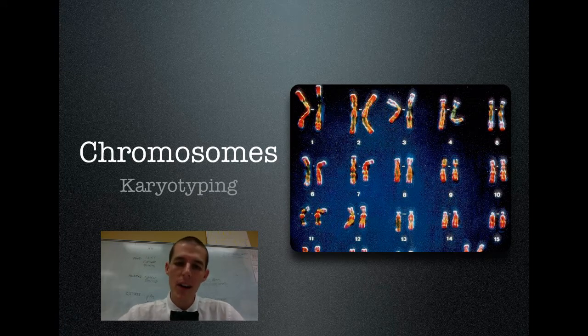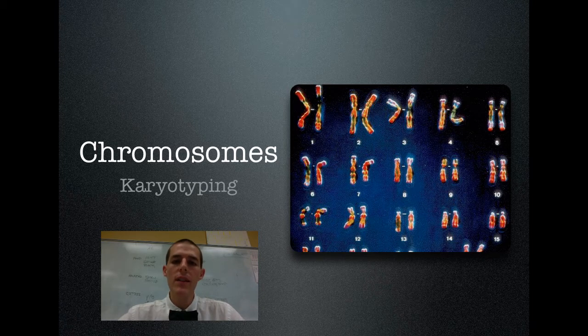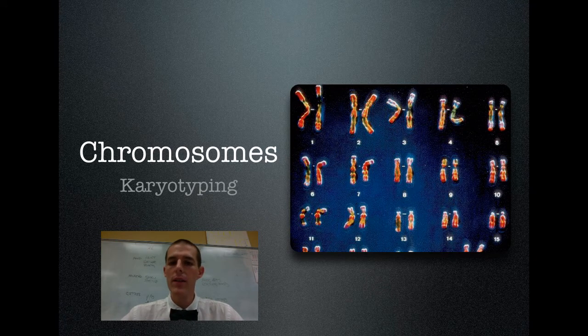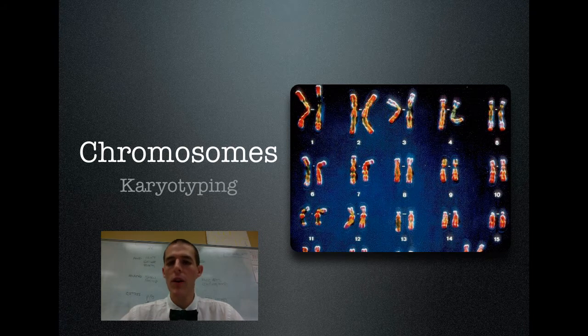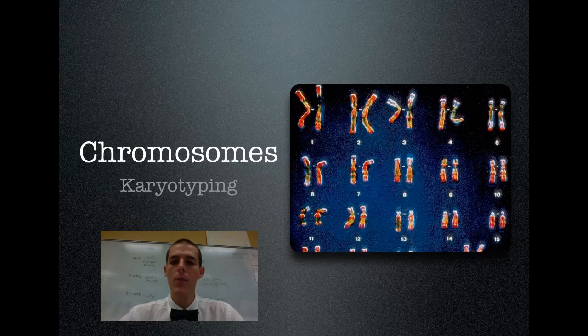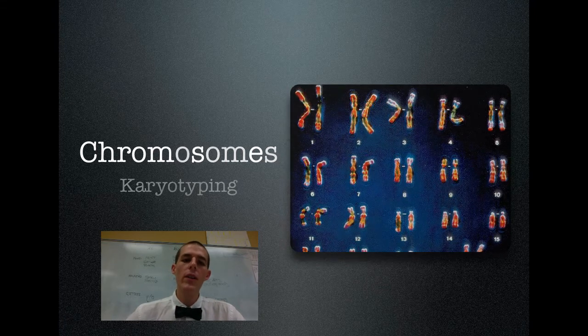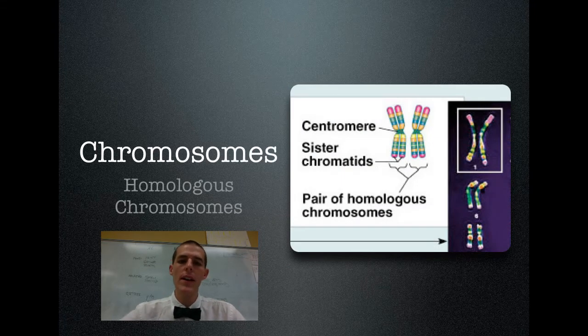You can see there on the right, a karyotype. What a karyotype is, is it's a visual picture of all of the chromosomes. And the chromosomes are matched up according to similarities. So chromosome one is matched up with its partner, chromosome one. You can see chromosome two, three, four, five. Each number of chromosome is different from all of the others. So know that a karyotype is a way to visualize chromosomes.